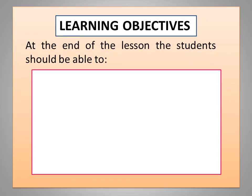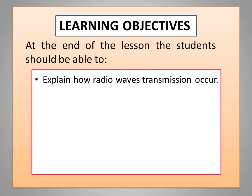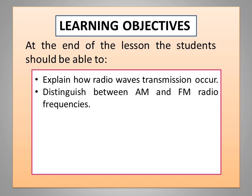Before we proceed, here are the objectives of the lesson. At the end of the lesson, the student should be able to: explain how radio wave transmission occurs, and distinguish between AM and FM radio frequencies.